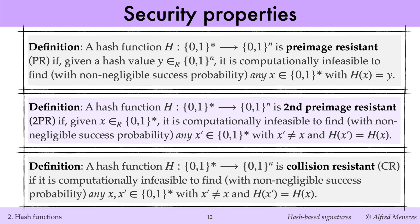The third security requirement for hash functions is collision resistance. A hash function is collision resistant if it is computationally infeasible to find, with non-negligible success probability, two distinct messages X and X′ that have the same hash value. Such a pair of messages is called a collision for H. Since the domain of H is typically much larger than its codomain, collisions must exist by the pigeonhole principle. The key question is not their existence, but whether any one collision can be found efficiently.